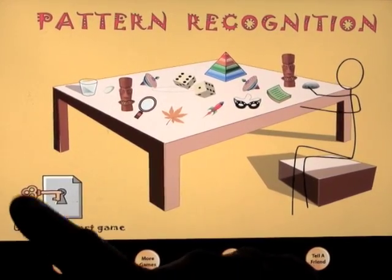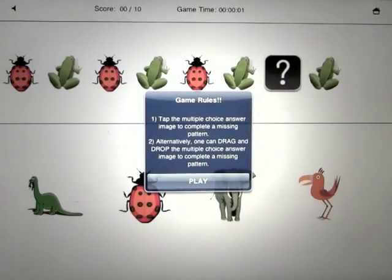Let's go ahead and turn the key. And what this says, game rules: tap the multiple choice answer image to complete a missing pattern. Alternatively, one can drag and drop the multiple choice answer image to complete a missing pattern.